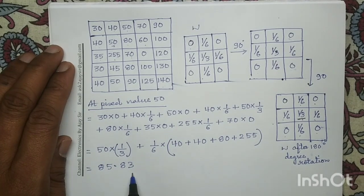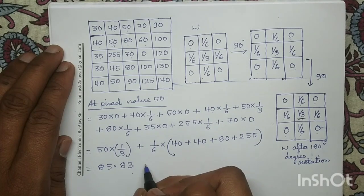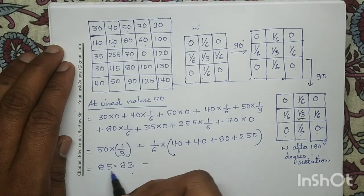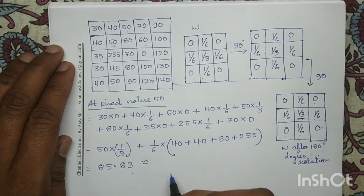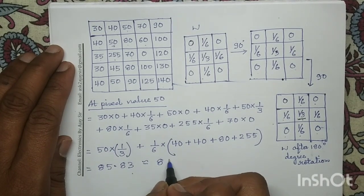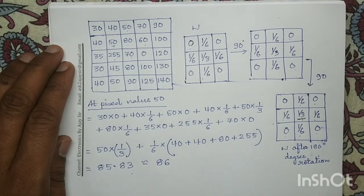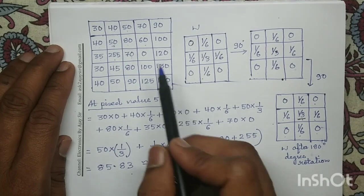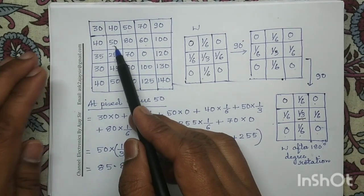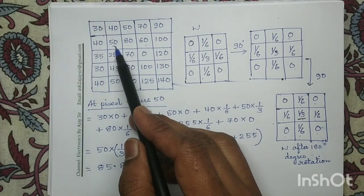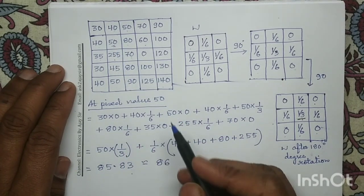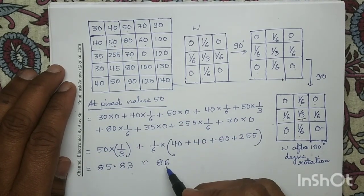Now since it is a floating point number, we will round off to its nearest integer. So 85.83, its nearest integer is 86. In the output image, at the pixel location of pixel value 50, the new pixel value we will assign after performing the convolution operation is 86.